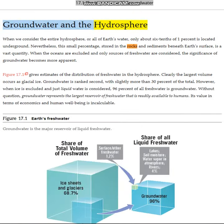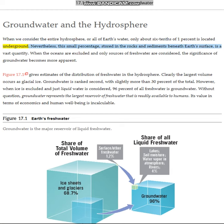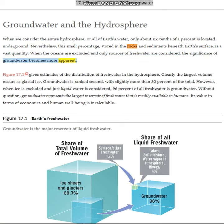Groundwater and the Hydrosphere. When we consider the entire hydrosphere, or all of Earth's water, only about six-tenths of one percent is located underground. Nevertheless, this small percentage, stored in the rocks and sediments beneath Earth's surface, is a vast quantity. When the oceans are excluded and only sources of freshwater are considered, the significance of groundwater becomes more apparent.